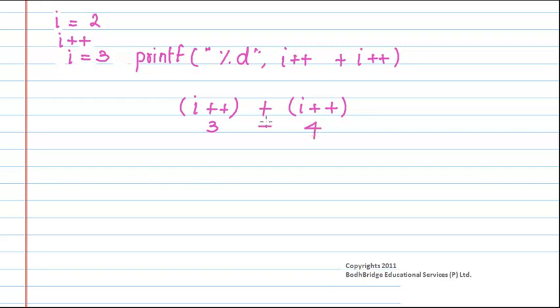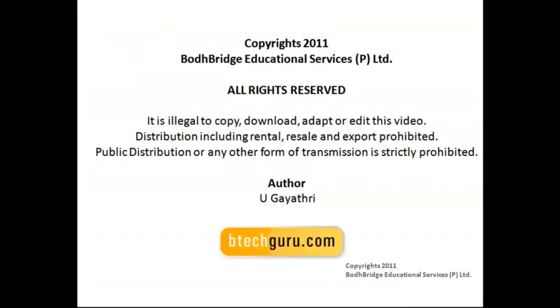And now the added result will give us 7. Only after printing the value of 7, now this incrementation would have been evaluated, and so the i value would have become 5. But this is not seen in the output. So that is why we have got the value of this expression as 7 in the output screen. Thank you.